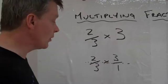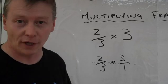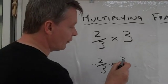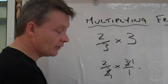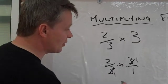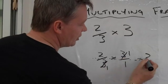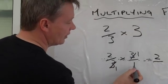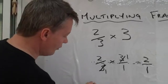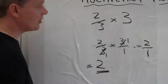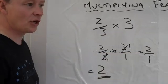To make the numbers a little bit easier, I'm going to get rid of these 3s, because both of them can divide by 3. If you divide 3 by 3 you get 1, and if you divide 3 by 3 you also get 1. So the question now is 2 times 1, which is 2, over 1 times 1, which is 1. So 2 over 1 equals 2. The answer to 2 thirds times 3 is 2.